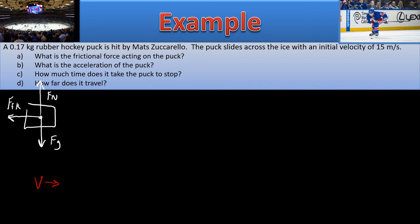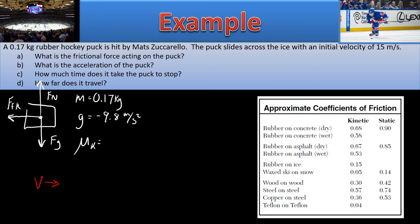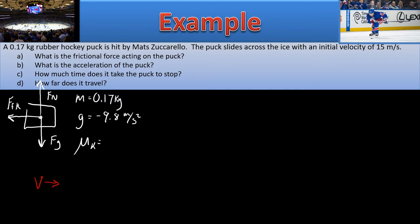What is the frictional force acting on the puck? Let's write our given information. The mass is 0.17 kilograms. The acceleration due to gravity is negative 9.8 meters per second squared. We can figure out the coefficient of friction by looking at the reference table — a rubber hockey puck on ice gives us 0.15.